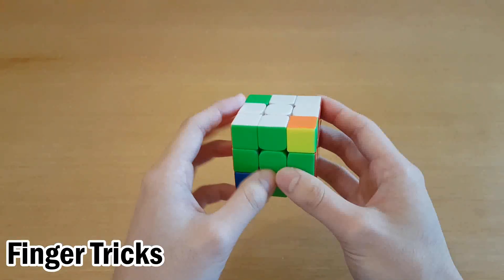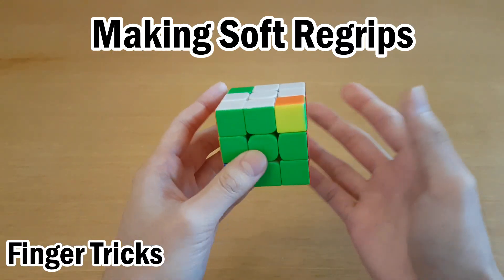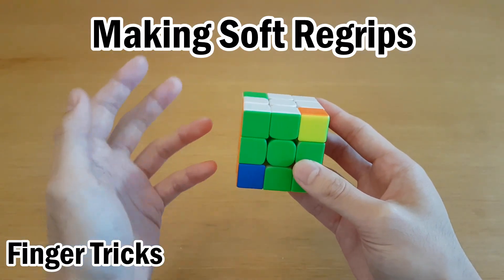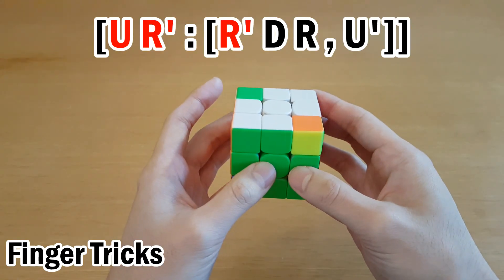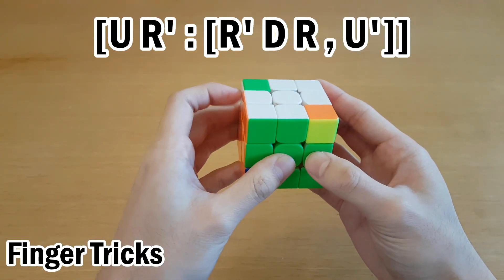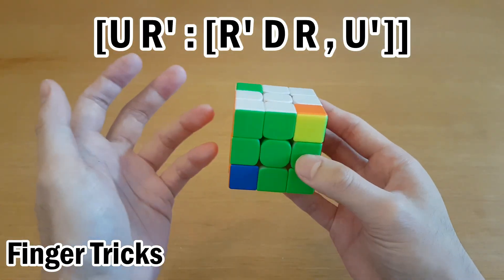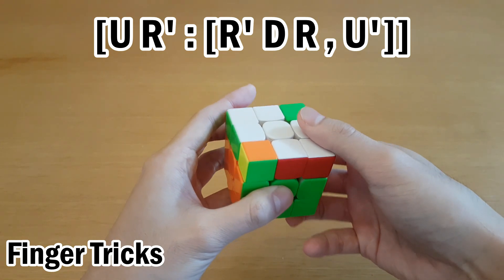As you optimize commutators, you want to think about two important things. One is making re-grips soft re-grips. So a soft re-grip is just a re-grip that happens during other moves, so it doesn't take up time. For this commutator, we have a U R2' and that's not a good grip. So instead, I do U with this hand while re-gripping. So this alg isn't made any slower from the re-grips because they're done during moves.